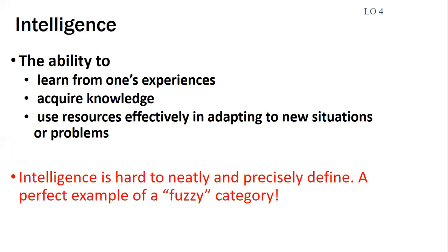Intelligence is a really hard term to neatly and precisely define. Since earlier in the reading, you were exposed to concepts and categories, intelligence is actually a prototype. A prototype is a fuzzy category. It's hard to nail down specifically what counts as being intelligent and what doesn't.